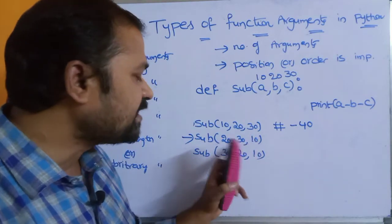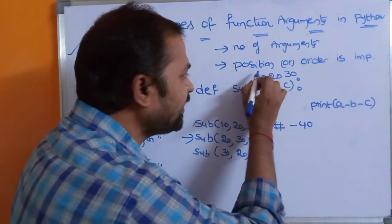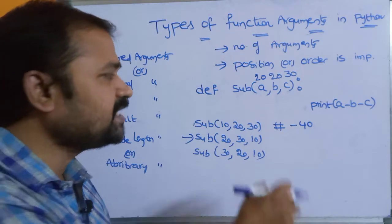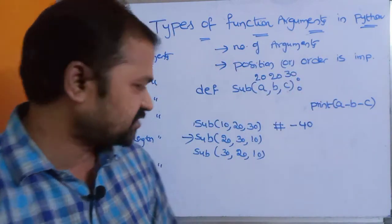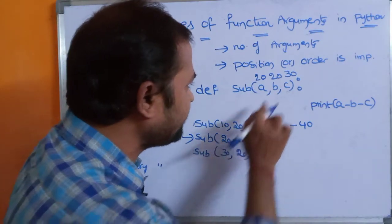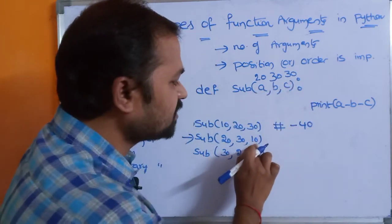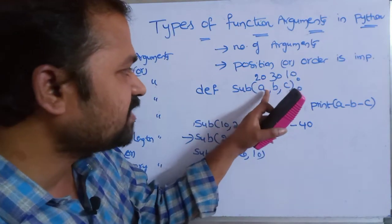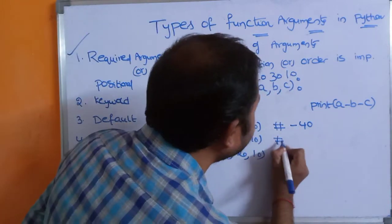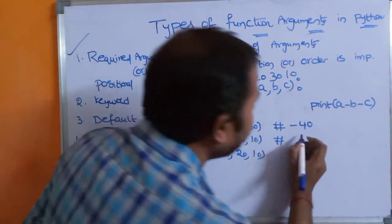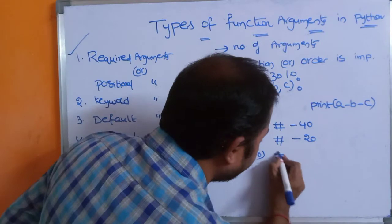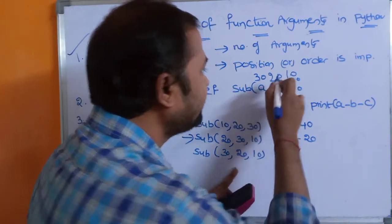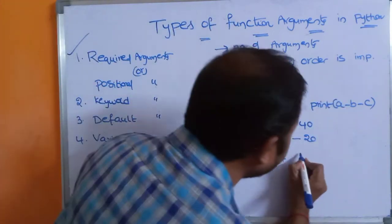For the second call sub(20, 30, 10), since it's a positional argument, values are assigned in order: 20 is stored in a, 30 in b, and 10 in c. So the output is 20 minus 30 minus 10, which equals minus 20. For the third call sub(30, 20, 10), 30 goes to a, 20 to b, 10 to c, giving 30 minus 20 minus 10, which equals 0.